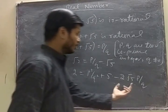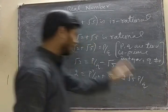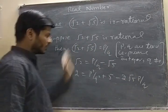Now what did I do? I took minus 2 root 5 P by Q to the other side, and moved this 2 to this side.